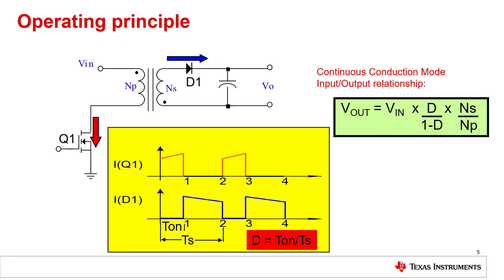A flyback transformer needs to store energy and therefore needs a magnetizing inductance, which we try to avoid in a real transformer.